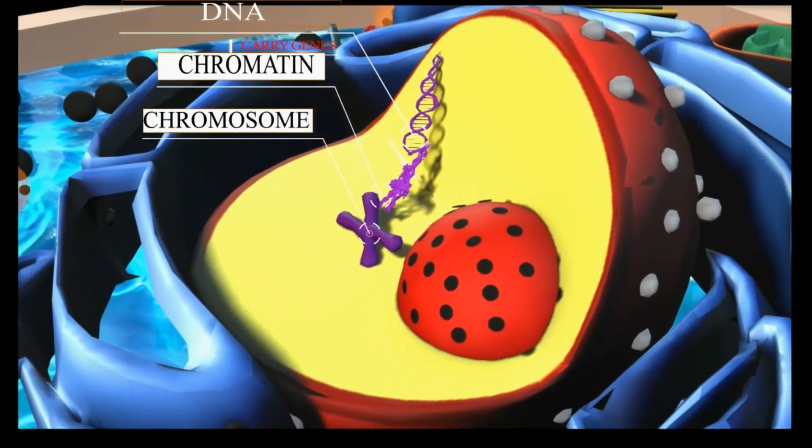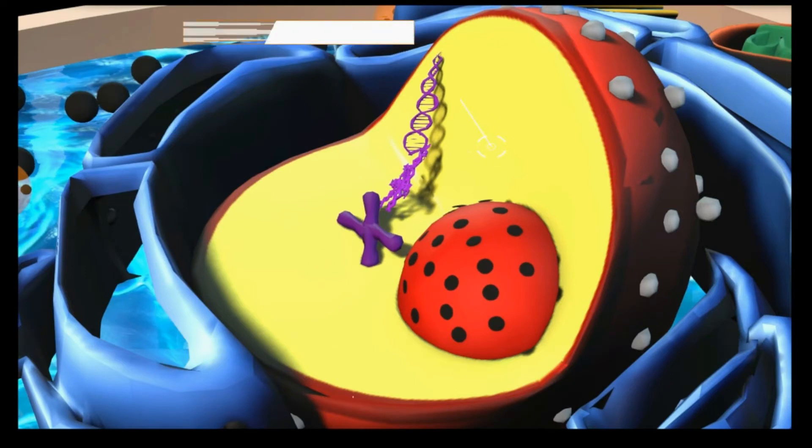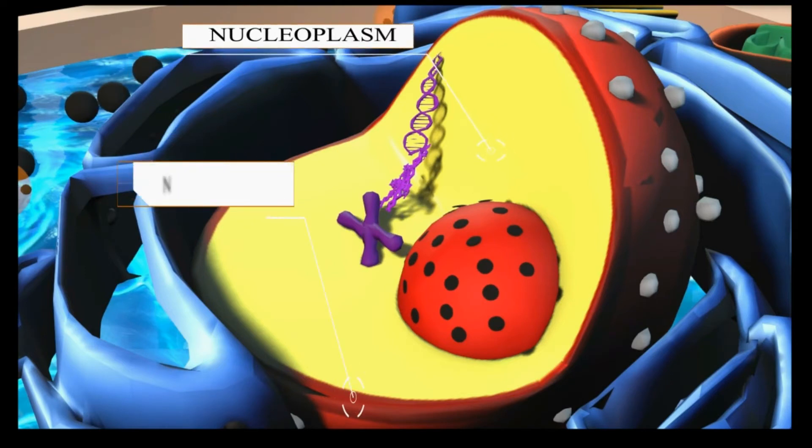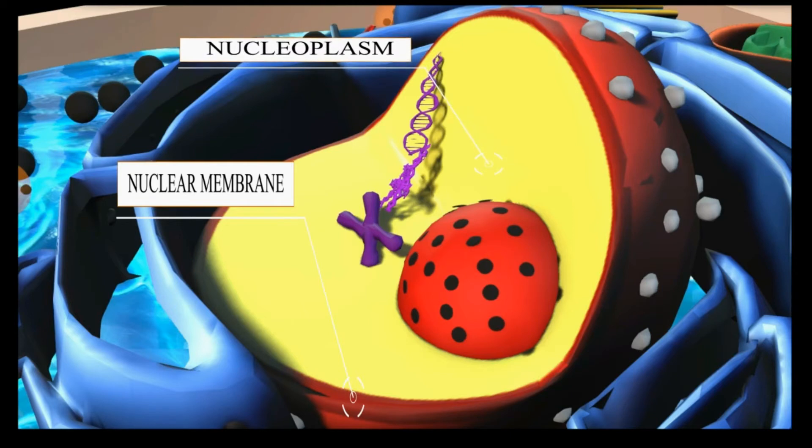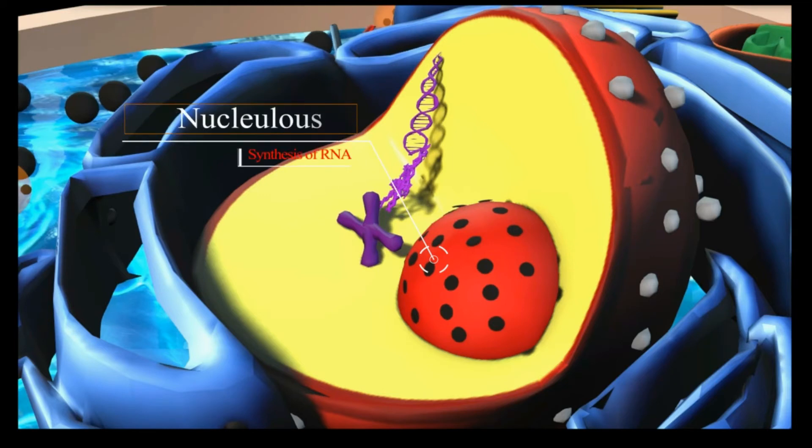The nucleus contains nucleoplasm, which is similar to the cytoplasm of a cell in that it is semi-liquid and fills the empty space in the nucleus. The nucleoplasm contains the nucleolus, which is the site of ribosomal RNA production. The nucleus may contain one nucleolus or more.